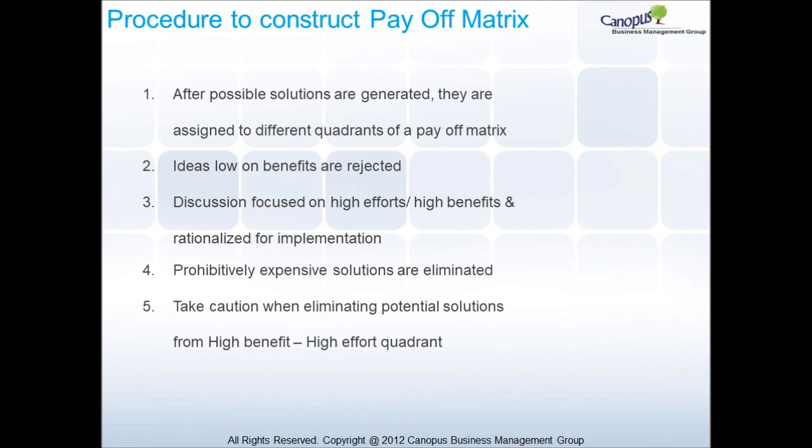In the procedure to construct a payoff matrix, after possible solutions are generated, they are assigned to different quadrants of a payoff matrix. Ideas that are low in terms of benefits are rejected. Discussion is focused on high efforts or high benefits and rationalized for implementation. Prohibitively expensive solutions are eliminated. Take caution when eliminating potential solutions from this quadrant.